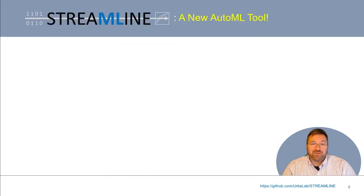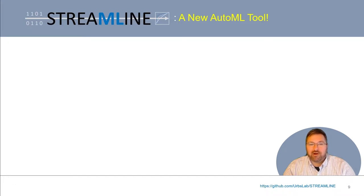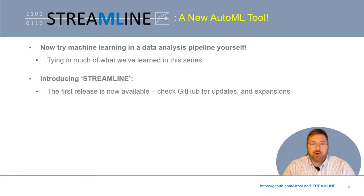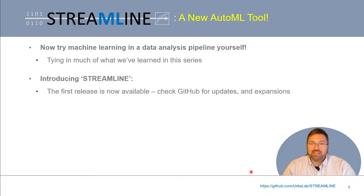With all of that in mind, I'll end this video series talking about a new, open-source, and freely available AutoML tool called Streamline, introduced this year by my research group. Streamline is an acronym for Simple, Transparent, End-to-End Automated Machine Learning Pipeline. The purpose of introducing Streamline here is to give all of you an accessible way to try out machine learning as part of a data analysis pipeline that covers much of what we learned about in this series. Make sure to star the repository at the GitHub link provided.